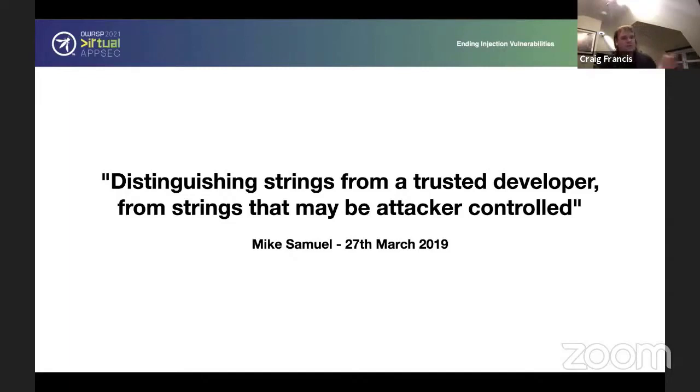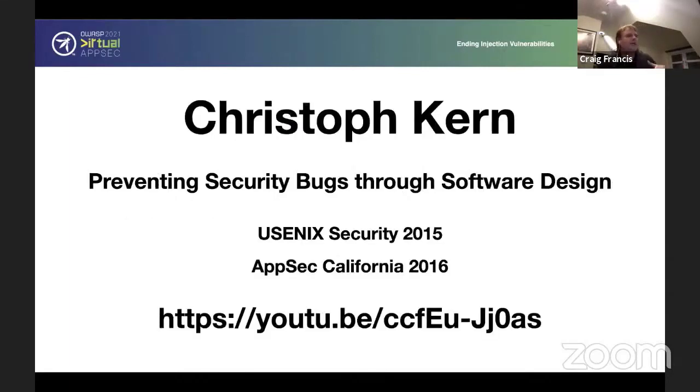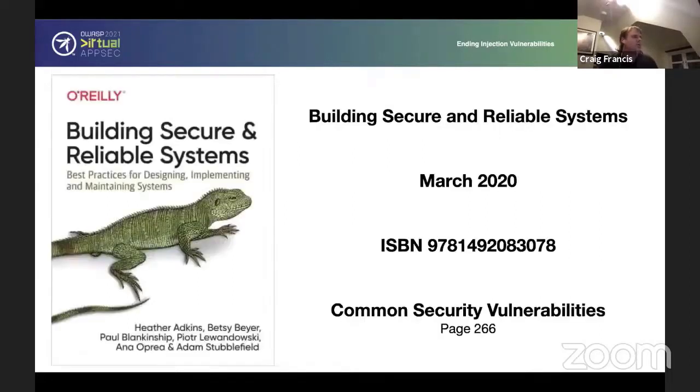What we can also do is use information where Christophe Kern did a talk back in 2015 or 2016 on preventing security bugs through software design. Christophe works at Google and this is how they have approached the problem themselves. And it has been very effective at stopping these problems. It's also included in the Building Secure and Reliable Systems book from a few different Googlers. If you do get this book, if you just turn to page 266, there's about four or five pages on this basic concept.